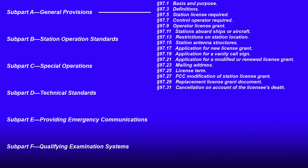Subpart A also covers applications for new license grant, vanity call sign applications, application for modifying or renewing your license, your mailing address, license terms, FCC modification of station license grant, replacement of license grant document, and cancellation on account of the licensee's death.